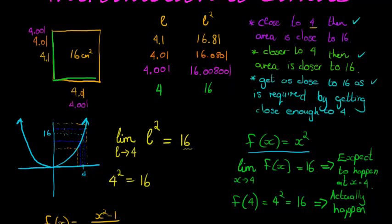If you were to give me a little neighborhood here and tell me I must choose a number and fall inside that neighborhood — I'm not allowed to get to 16, I must just fall in that neighborhood, and I'm not allowed to get to 4, I must just choose a number close enough to 4 — then it would definitely be possible. All I need to do is find a number close enough to 4, without actually being at 4, so that when I go up to my graph and read off on the vertical axis, I read off inside the neighborhood you gave me.